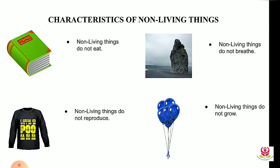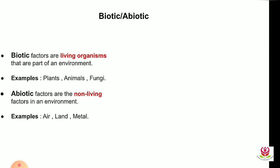So, non-living things do not eat, breathe, reproduce, or grow. Living things are also known as biotic factors — they are living organisms and part of the environment, for example plants, animals, and fungi. Non-living things are called abiotic factors, for example air, land, and metal.